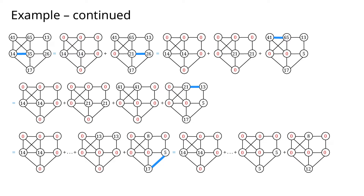The recursion stops because there is no longer an edge where both endpoints have positive weight. If every edge has at least one endpoint with weight zero, we can get a zero-weight vertex cover by picking all vertices with weight zero — this covers all edges for free. This is our base case.